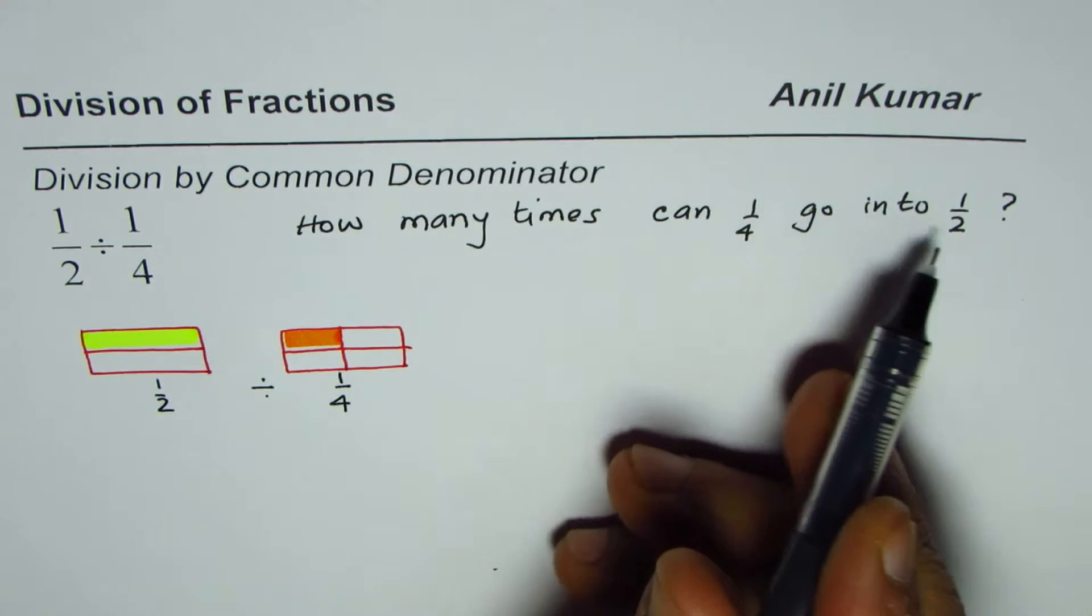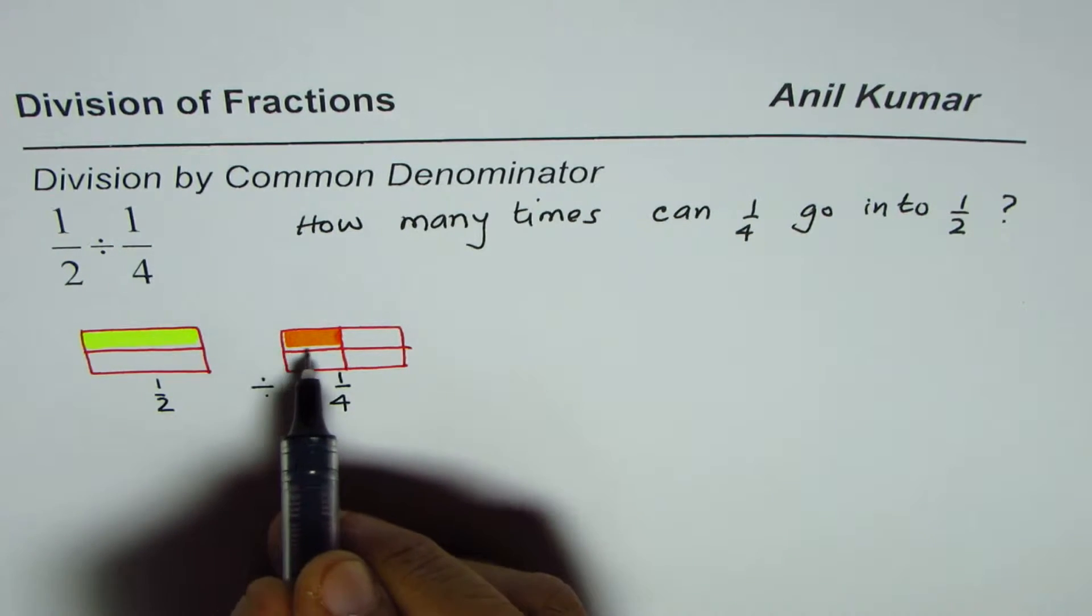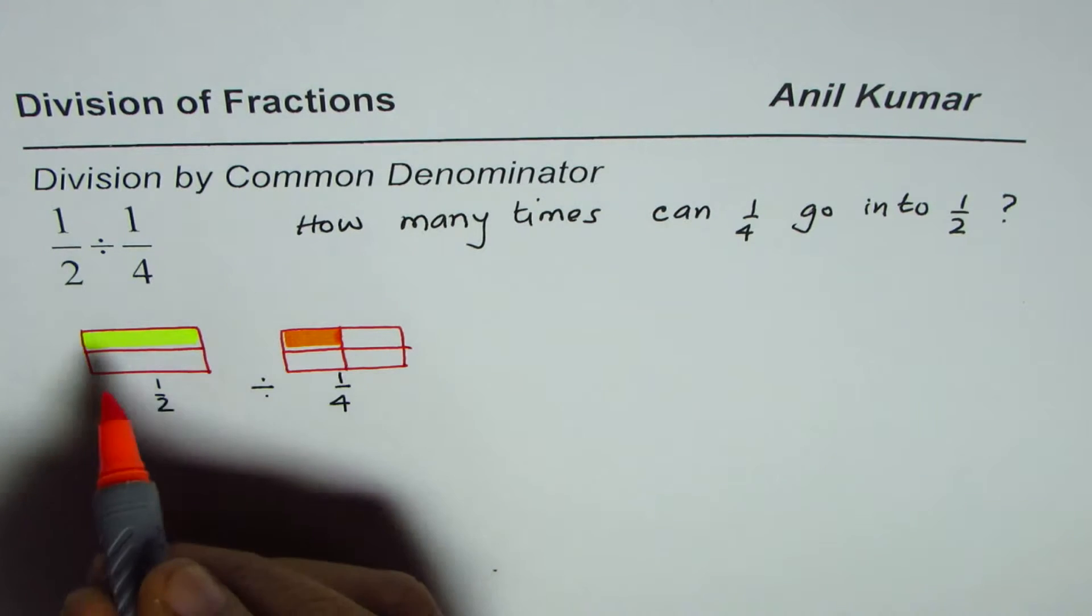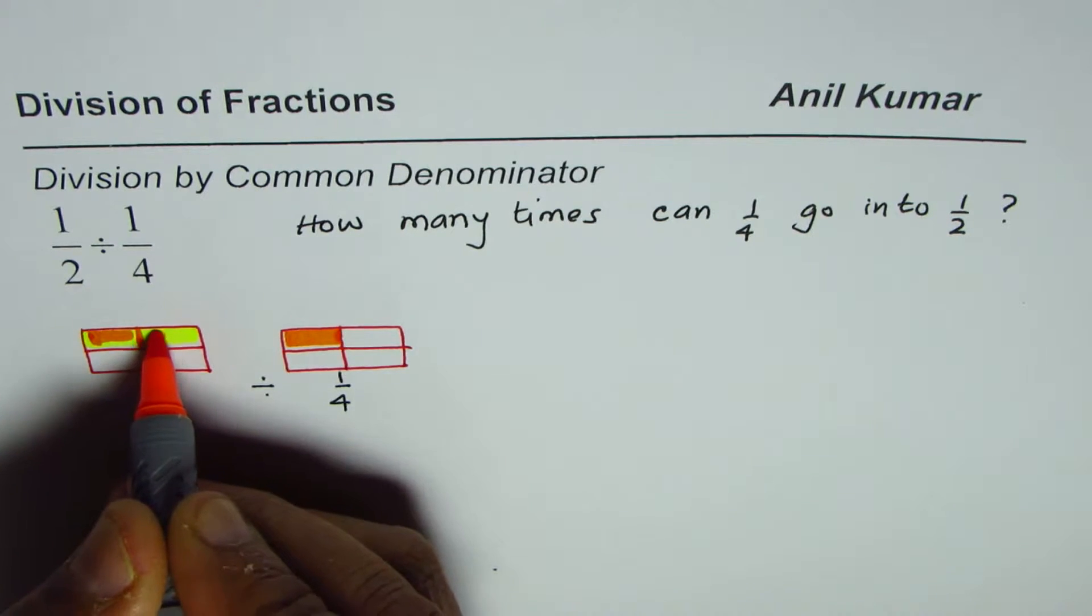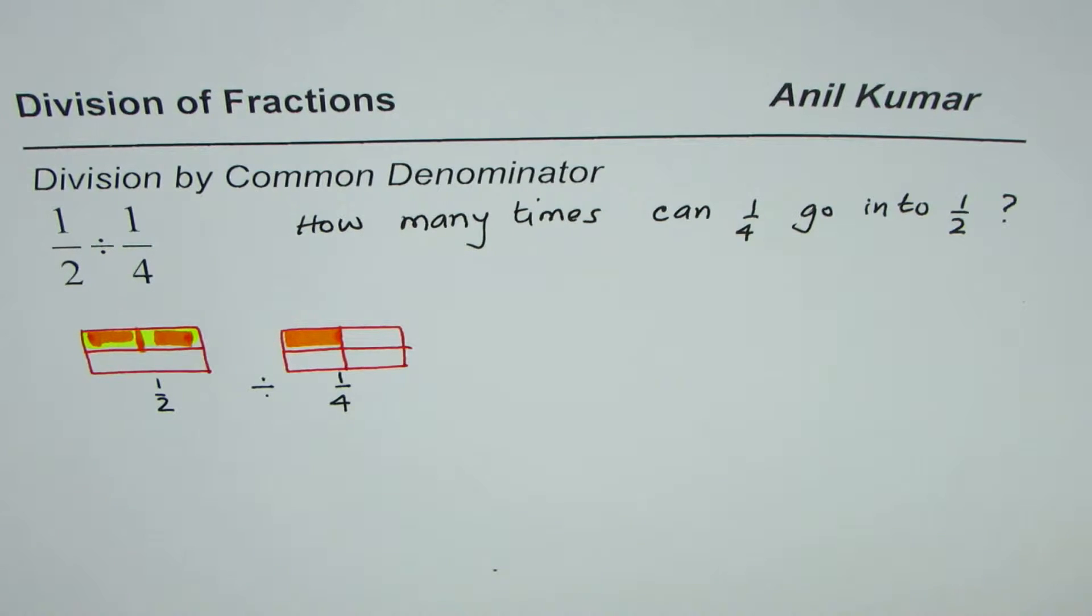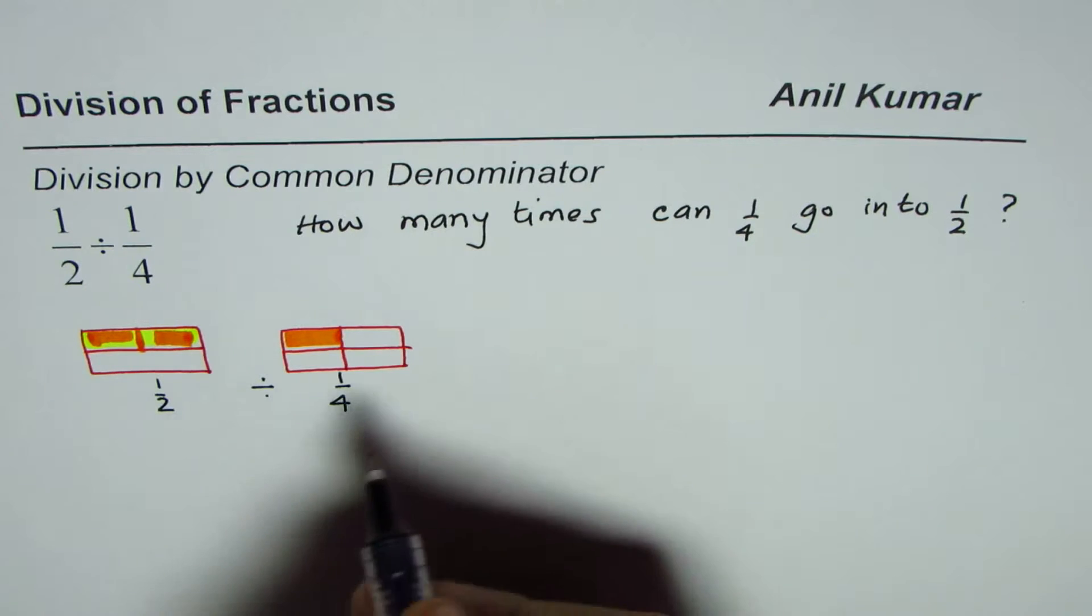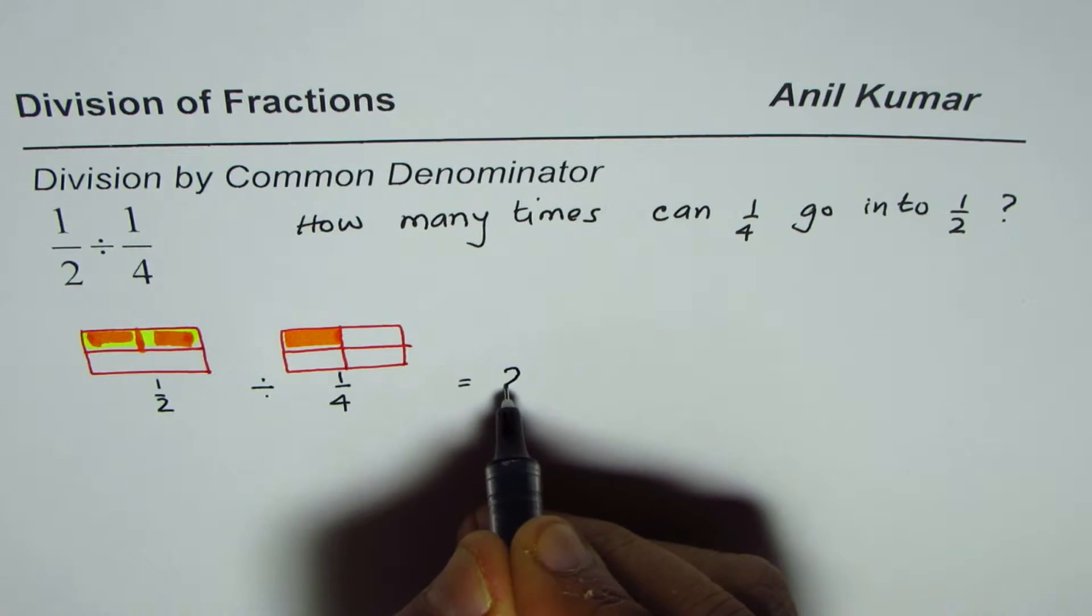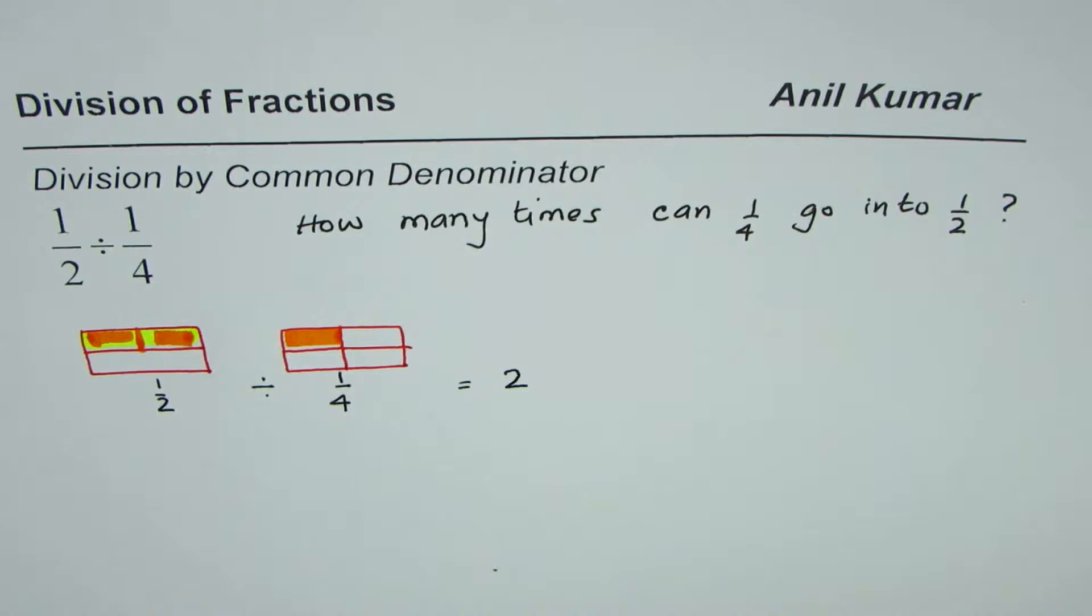Now the question is, how many times can one-fourth go into half? This much is one-fourth, so we can say it can go two times—one and one, so two times. Therefore, our answer is half divided by one-fourth is two. That is how we can answer division of fractions.